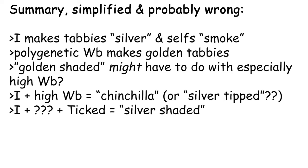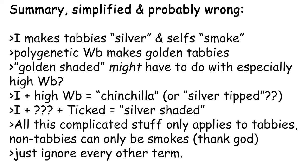Combining inhibitor and wideband in a tabby makes a cat either silver shaded or chinchilla, depending on how much widebanding there is and if the cat is ticked or not. No matter how much wideband a self-cat has, they won't show it, even if they have inhibitor.